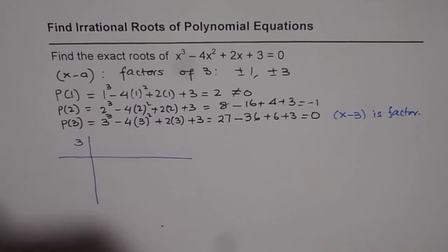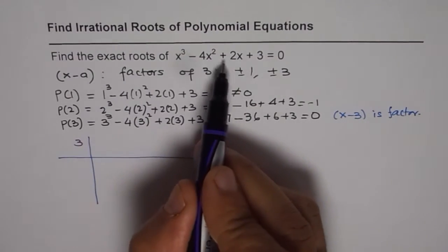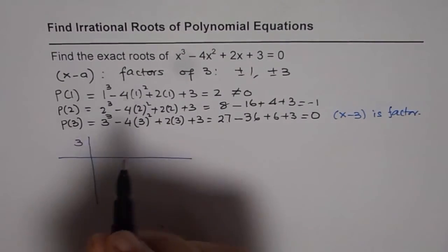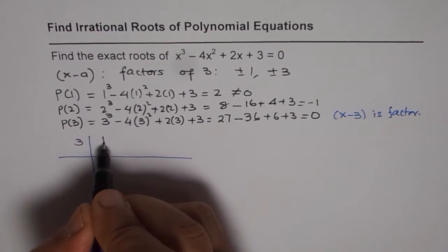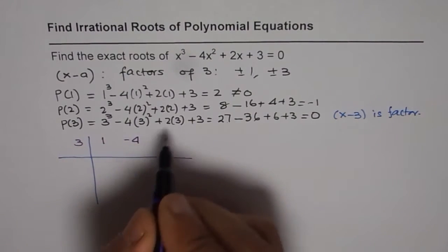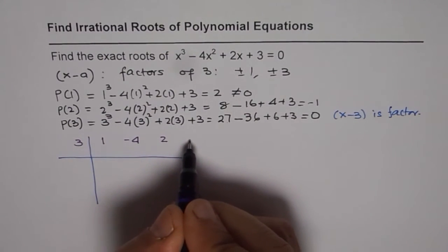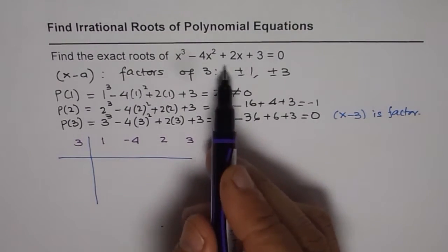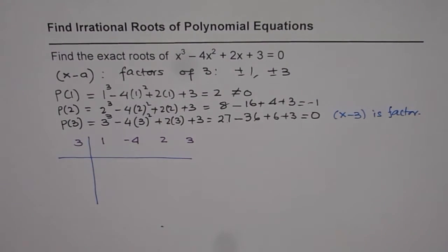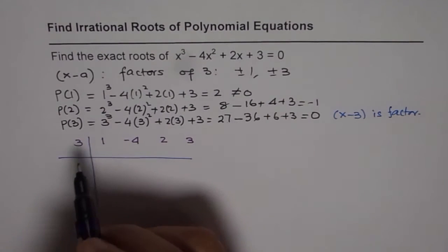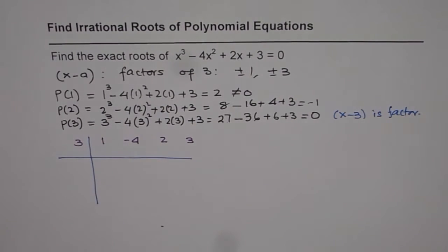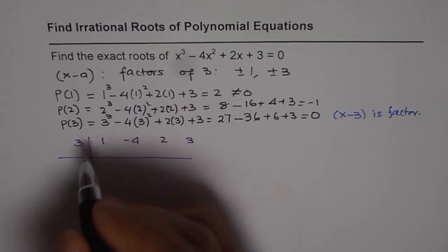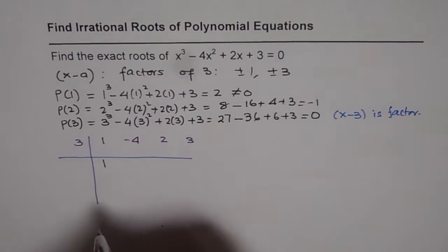P(3) was 0, so we will write 3 here. We write coefficients of these terms: first x³ coefficient is 1, then -4, then +2, and then 3. Sometimes some coefficients are missing, so you have to insert a placeholder which is 0. Now let's begin by bringing down 1. This is synthetic division. You can also do long division to get the answer.